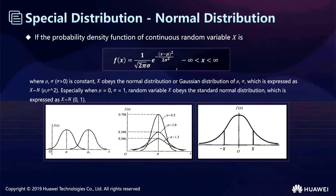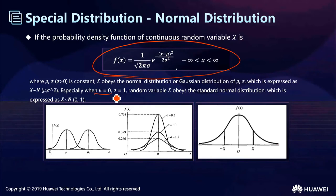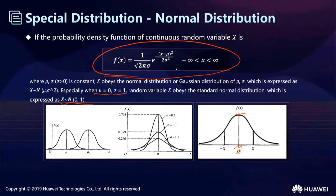For continuous random variables, there are also three special distributions. The first is the normal distribution. If the probability density function of a continuous random variable X satisfies the normal density formula, it belongs to the normal distribution. Especially when u equals 0 and sigma equals 1, it obeys the standard normal distribution N(0,1). When x equals u, the distribution gets its largest probability value. A large number of natural random variables approximately obey the normal distribution.